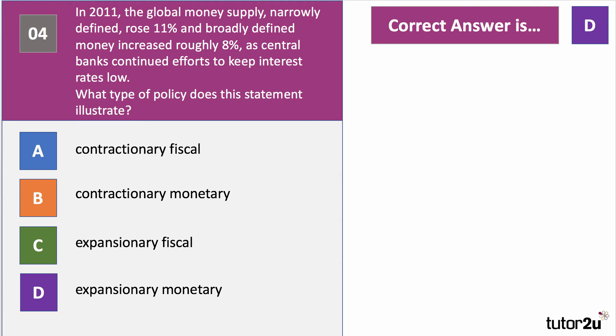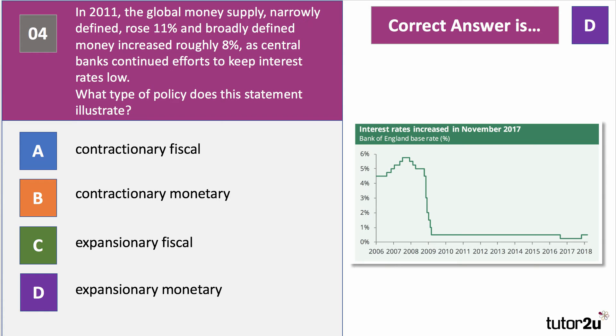The correct answer is D: expansionary monetary policy. This is when the central bank cuts interest rates or takes steps to increase the supply of credit — also described as a loosening or accommodatory monetary policy — designed to stimulate demand and output in the economy, perhaps lifting an economy away from deflationary pressure. In the UK, the Bank of England's base rate has been at 0.5% or even lower since the Brexit vote, so monetary policy has been highly expansionary.